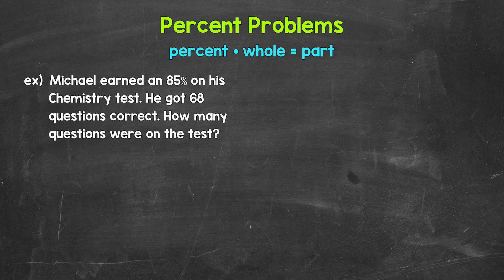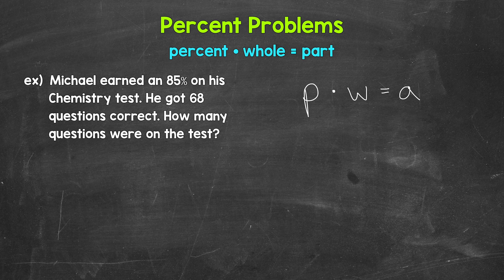We plug in what we are given and solve for what we are looking for. Let's jump into our example: Michael earned an 85% on his chemistry test. He got 68 questions correct. How many questions were on the test? Our equation is P for percent times W for the whole equals A for the part.